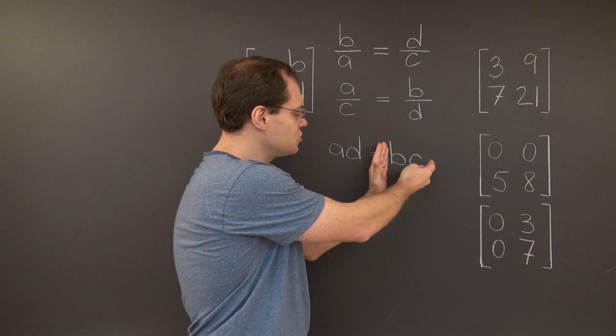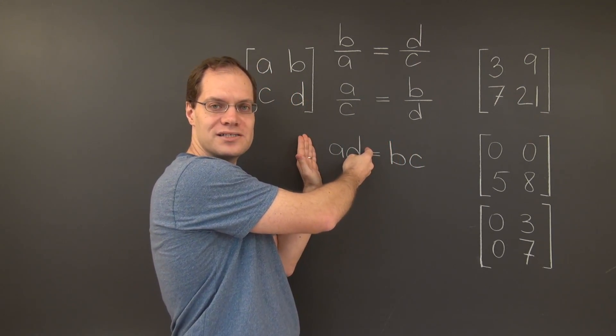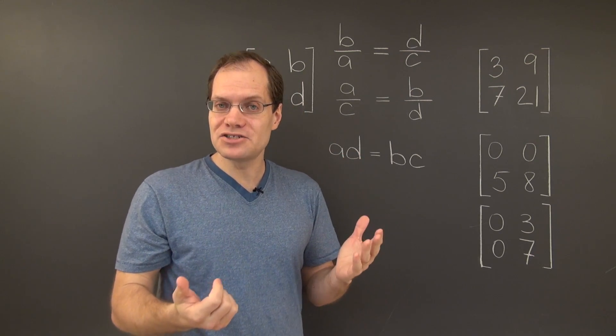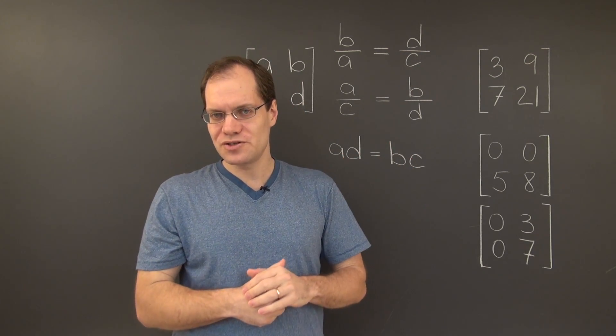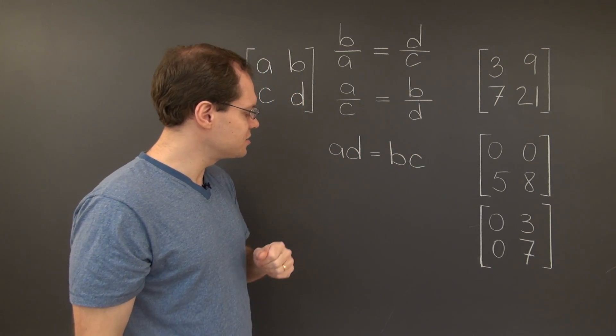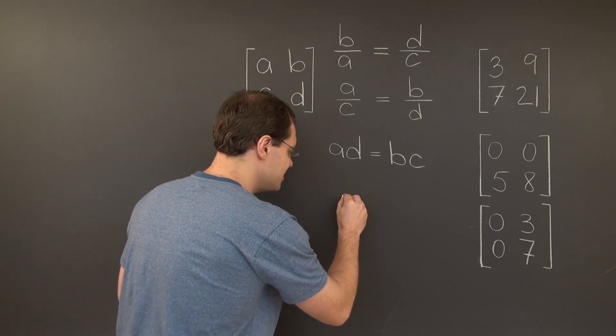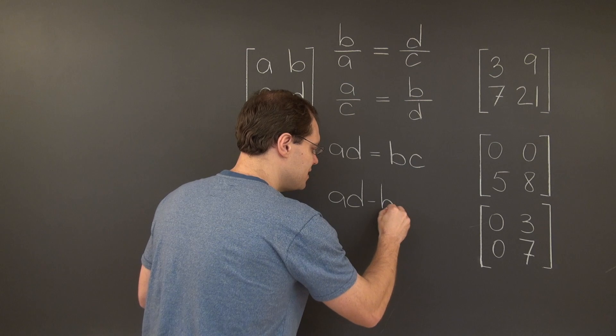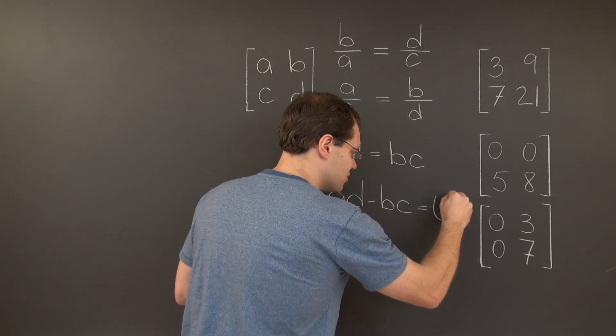Of course, what we'd want to do is combine all of the terms on one side so that we have a characterization of the matrix, all of those terms together. So we would rewrite this criterion as AD minus BC equals 0.